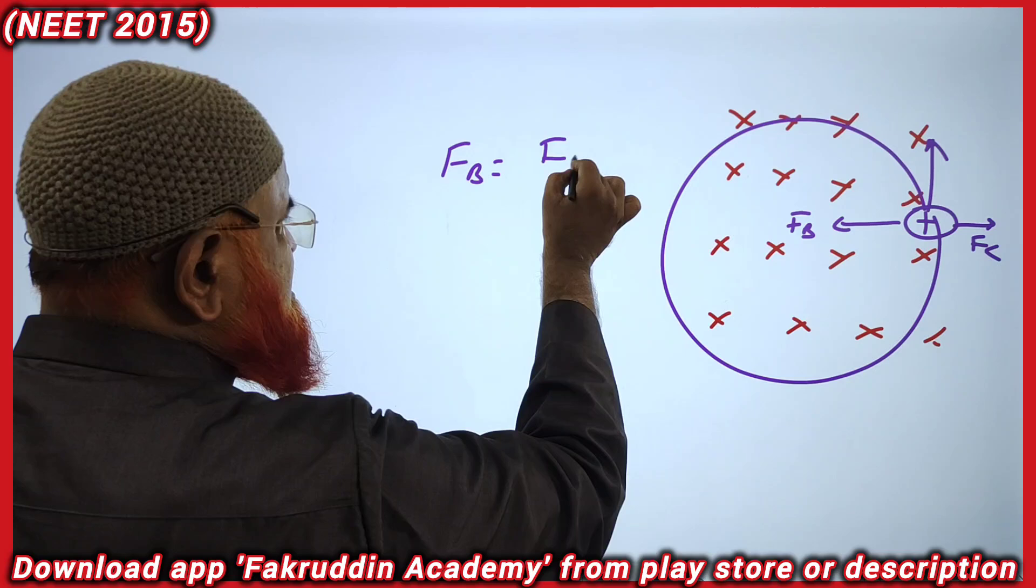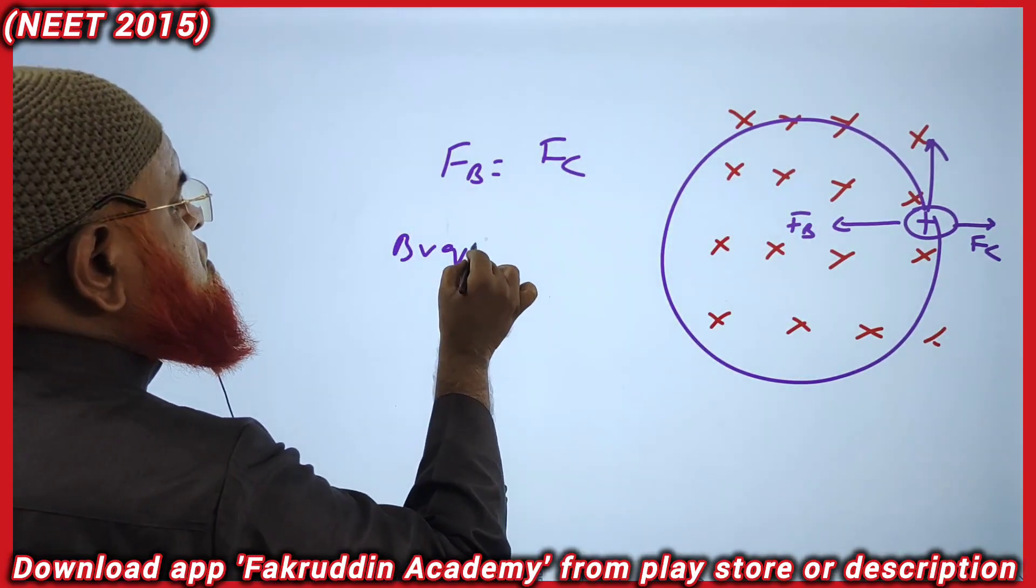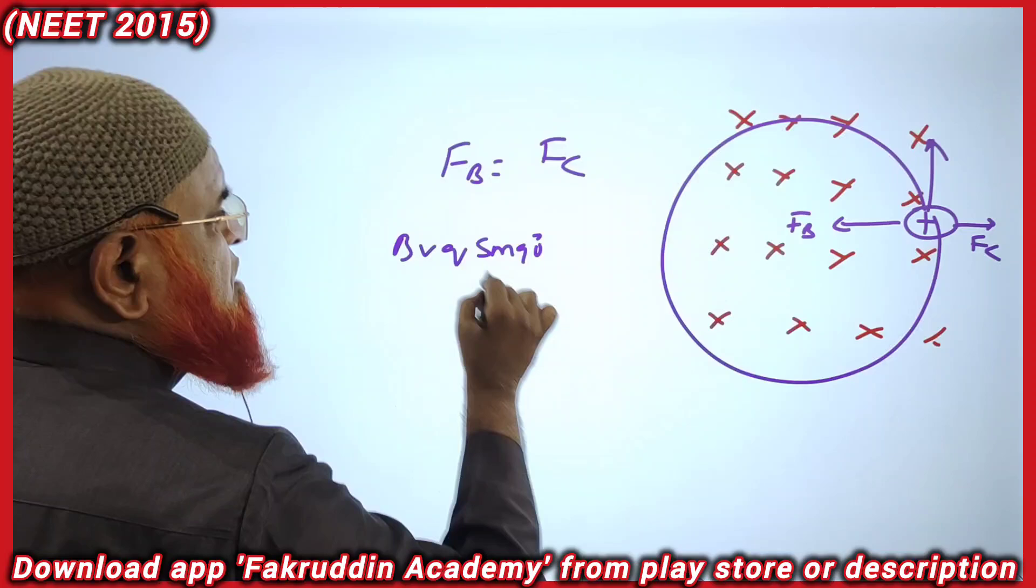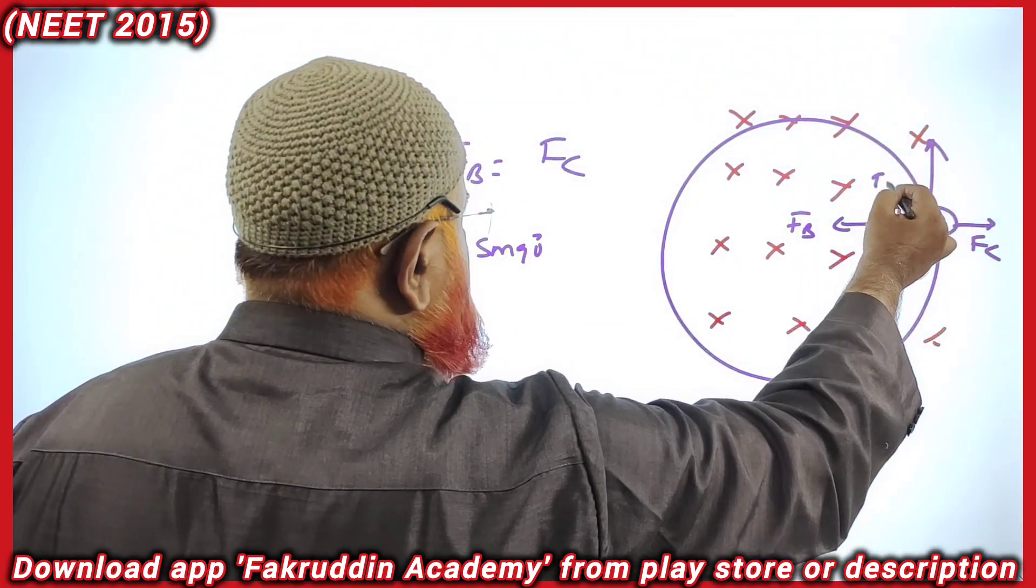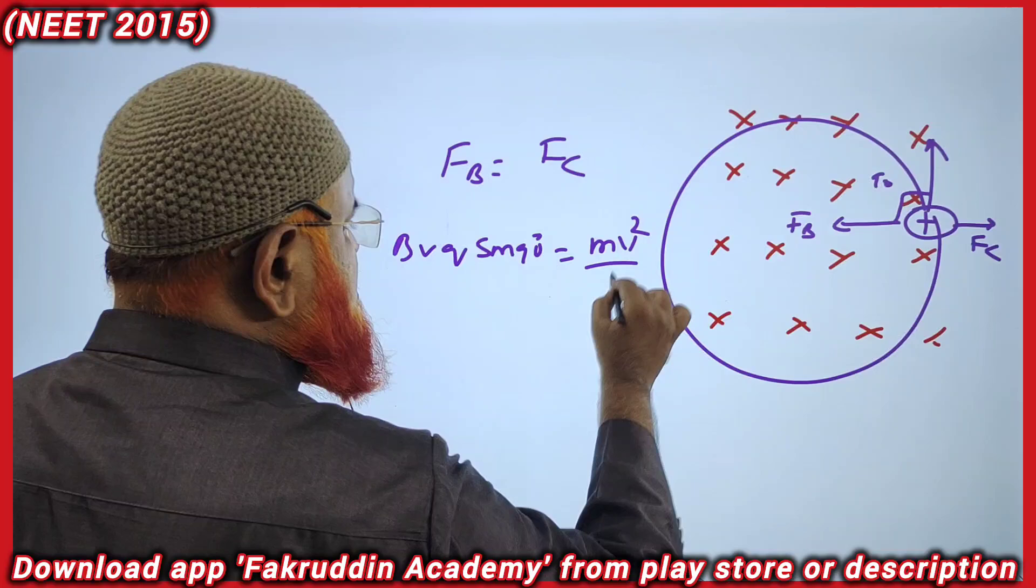Force due to magnetic field equals centrifugal force. This is BVQ sin 90° because they are perpendicular, 90 degrees they are making, and this equals centrifugal force which is mv²/r.